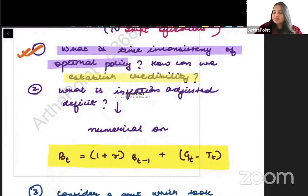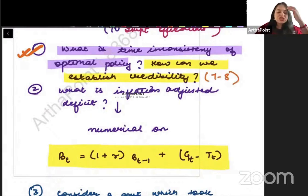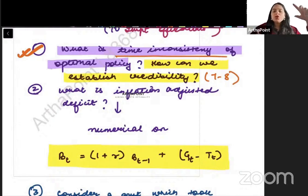This says what is time inconsistency of optimal policy. How can we establish credibility? This can come for 7 to 8 marks. This means you will go ahead and you will explain what is called as time inconsistency. So the moment you start reading your book, where it talks about how it is bargained during kidnapping,